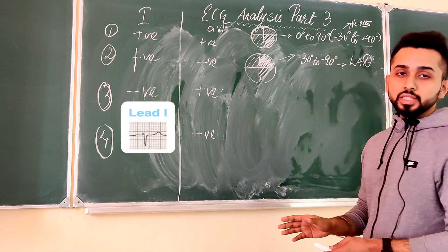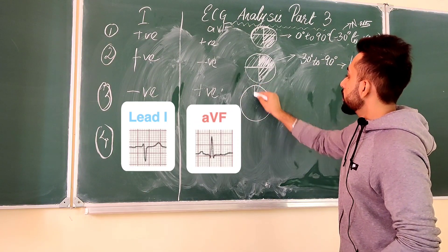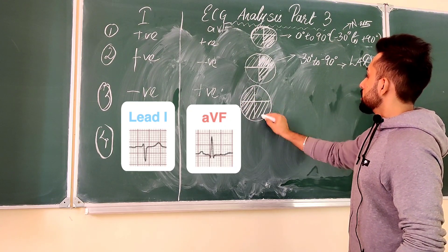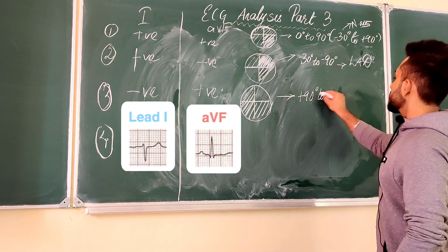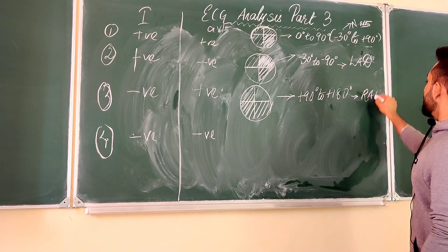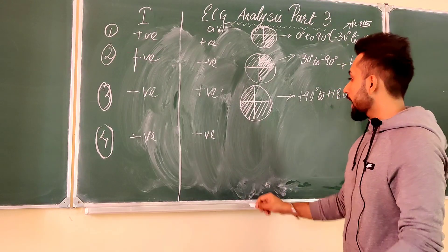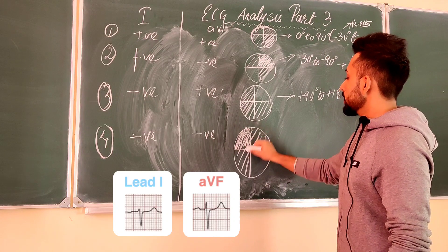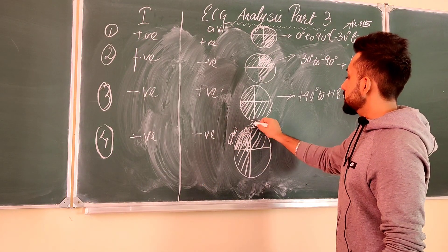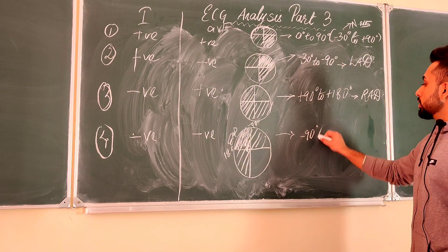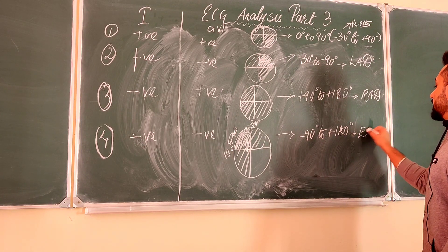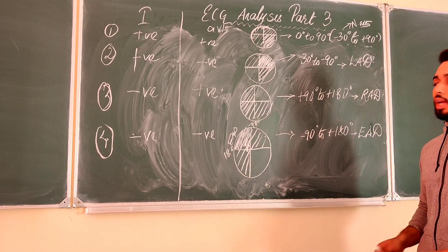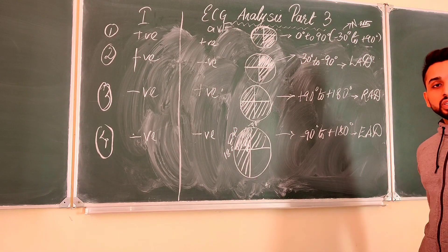The third possible scenario: Lead 1 is negative and AVF is positive. The overlapping section runs from plus 90 degrees to plus 180 degrees — this is right axis deviation, or RAD. In the last possible scenario, both of them are negative: the overlapping section gives extreme axis deviation, from minus 90 degrees to positive 180 degrees — this is EAD, or extreme axis deviation. By using this quadrant method, you can very easily determine the cardiac axis of your patient when you look at their ECG strip.